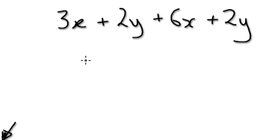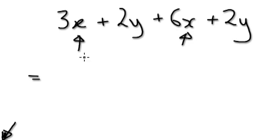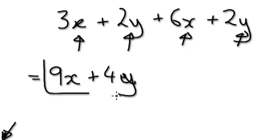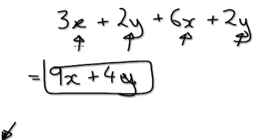Press pause on your YouTube video. Okay, what does this become? Look for things that are the same. You've got x here and x here: three x plus six x is nine x. And then you've got two y here plus two y here, so that's four y. This is a lot neater and better.